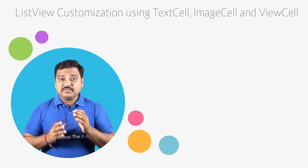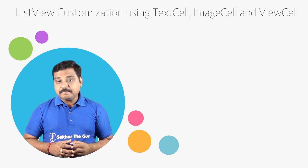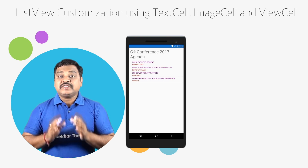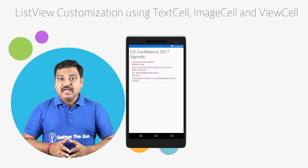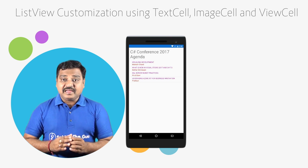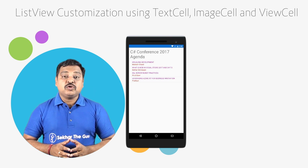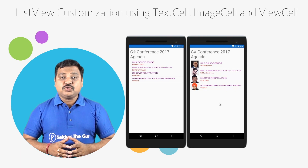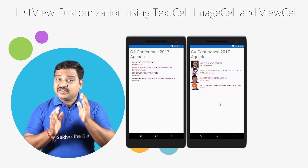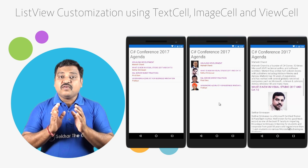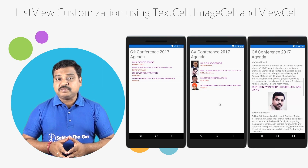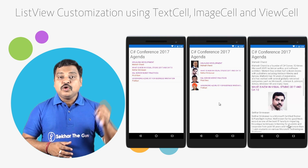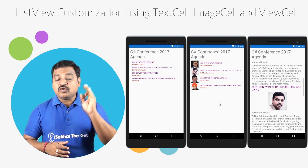List view in Xamarin Forms can be customized in three different ways. Whenever we require master detail information, we can use text cell for customization. Along with the master detail information, if we require an image also, then we can use image cell. And for any other user-specific requirement, we can use view cell for customization.